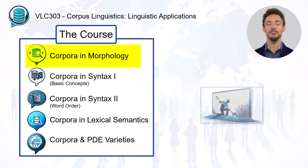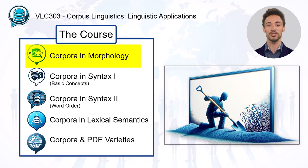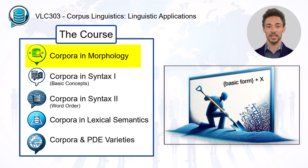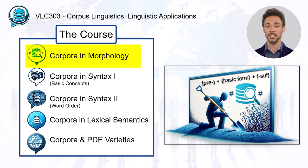The first of these units starts with a discussion of the basic morphological processes and the underlying morphological operations, and it specifies how corpora can be used to investigate certain morphological features of present-day English.